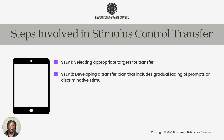The next step is developing a transfer plan that includes gradual fading of prompts or discriminative stimuli. The development of this transfer plan is going to be created by your behavior analyst. You as the technician, the paraprofessional, or supervisee, you're to implement that stimulus control transfer plan, which will include how we're going to go about fading prompts and discriminative stimuli for that particular learner.